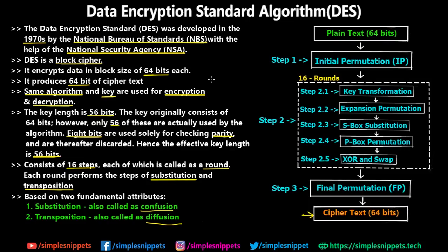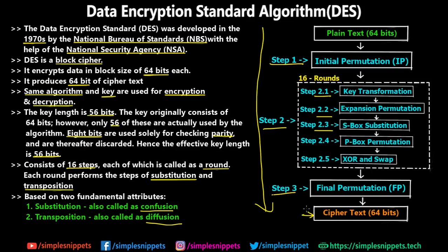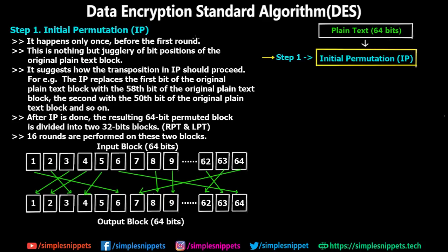This was a general overview of DES. Now we'll go step by step — starting from step 1 to step 2 and its inner steps, then step 3, and ultimately reach the cipher text. Let's start with step 1: Initial Permutation. Initial permutation (IP) happens only once, before the first round begins.